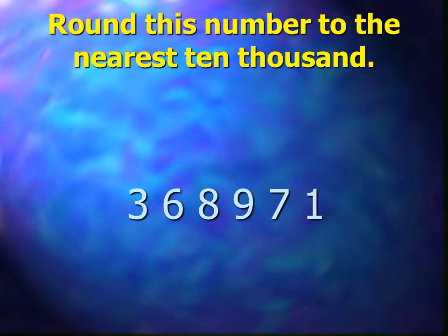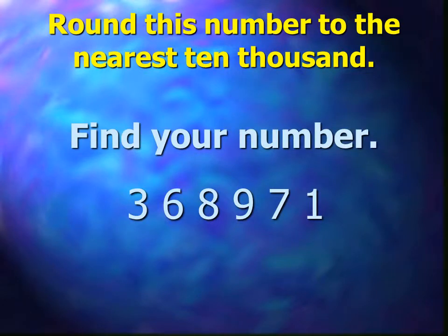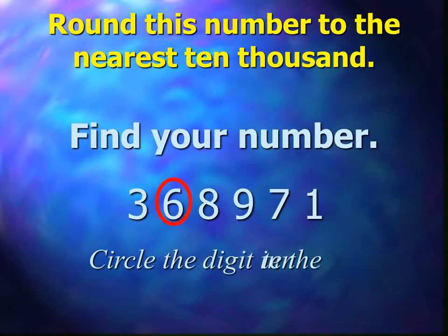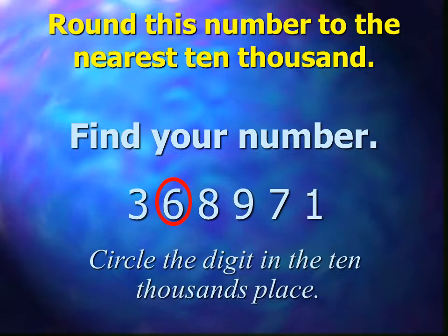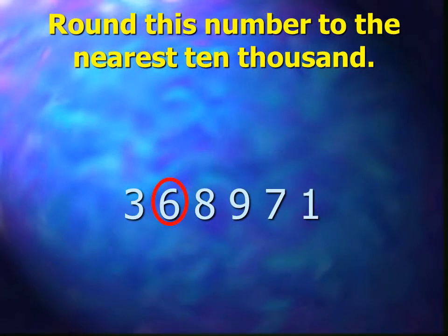Round this number to the nearest ten thousand. The number is 368,971. First thing, find your number. Circle the digit in the ten thousands place — this is the place that you are rounding to.